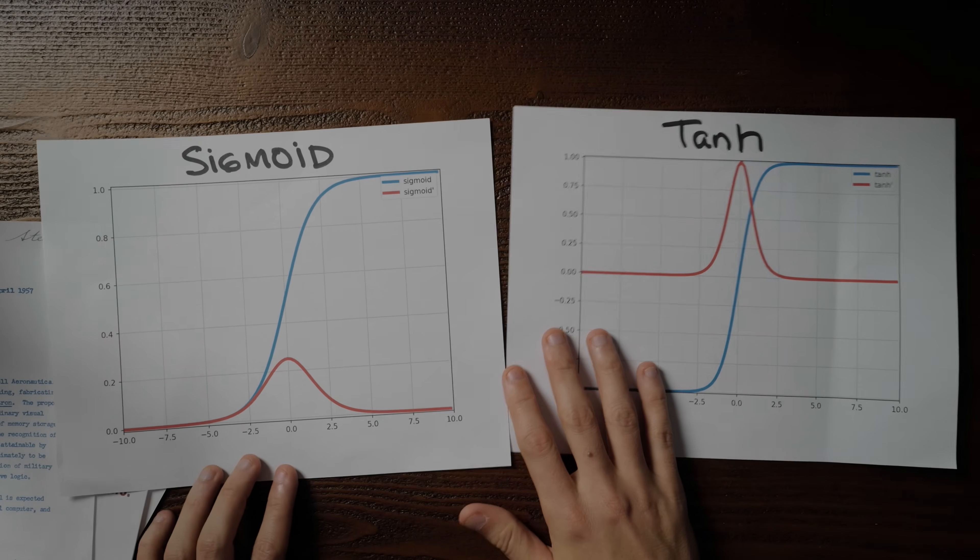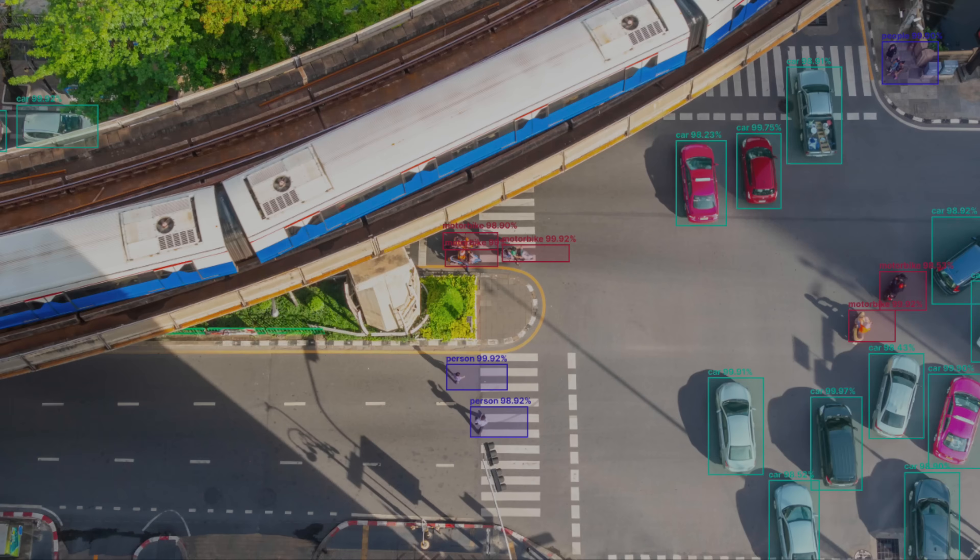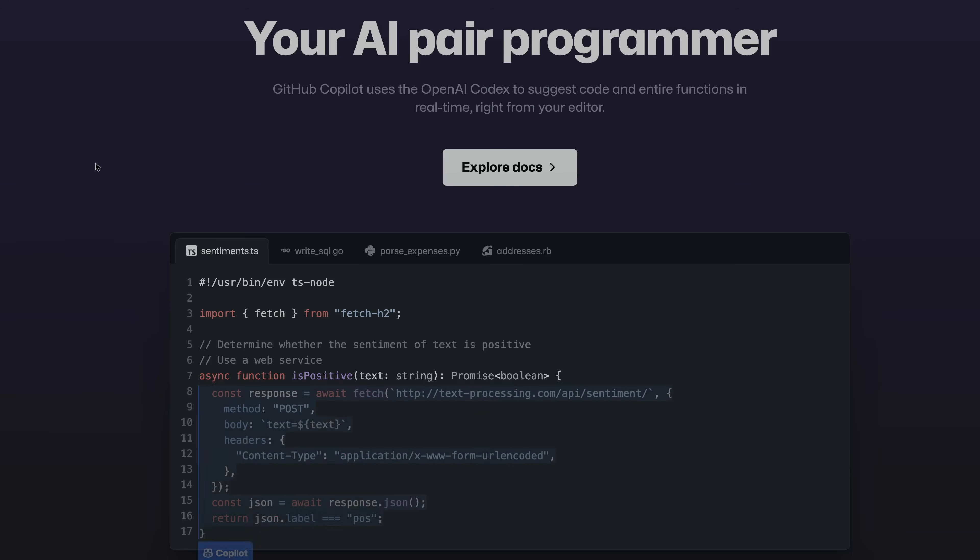Sigmoid and tanh were by far the two most popular activation functions back then. Look at the blue lines — these functions checked every single box we needed to train neural networks. Well, almost every single box. To tackle more complex problems like image recognition, text generation, and audio translation, we needed deeper networks. But as soon as we tried with more than a few layers, neural networks wouldn't work at all.